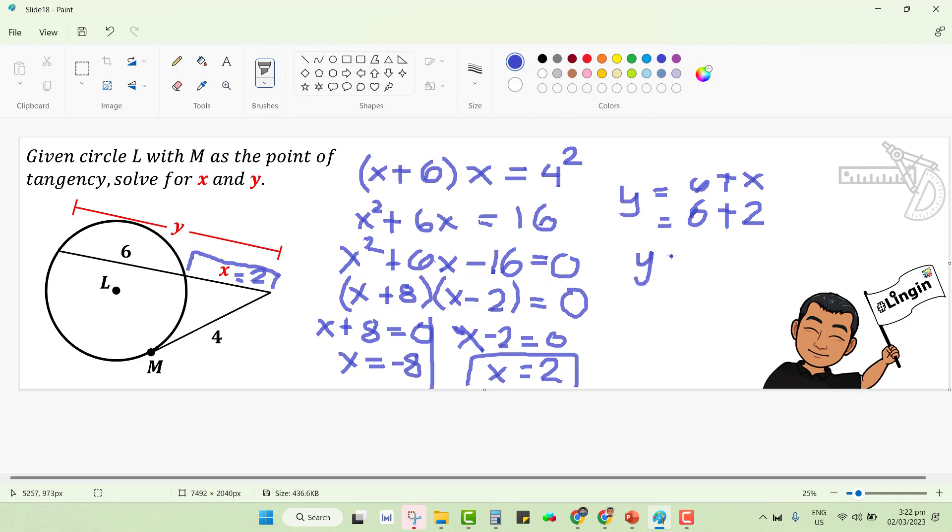The value for y is 8. And by the way, before I forget, let's just simply add here units because there is no given unit of measurement. So you have 8 units here for y and we have 2 units for x. These are the values of x and y in given circle L where we use the tangent-secant power theorem.